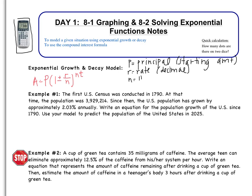So n is the number of times per year. In our case, n equals 1, except for compound interest. In compound interest, n is going to change, but in exponential growth and decay, n is just going to stay 1.